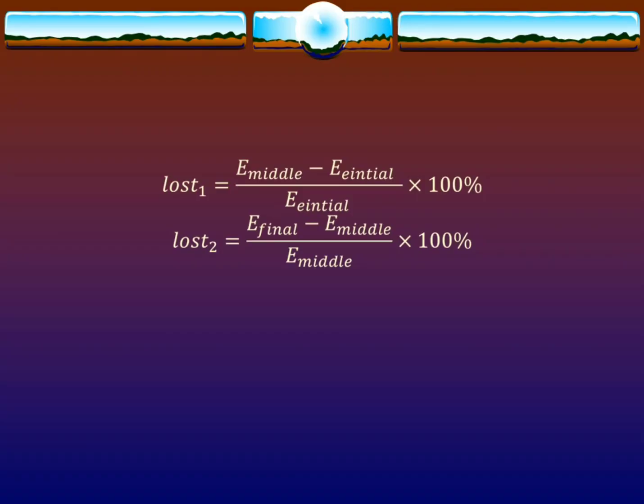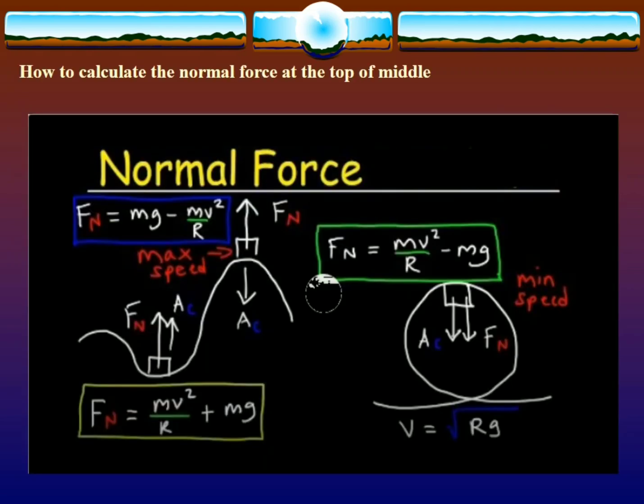Instructions over. The percent difference is calculated as E middle minus E initial over E initial times 100 percent, plus E final minus E middle over E middle times 100. Now how to calculate the normal force at the top of the hill? We will discuss this after the slide for part two.